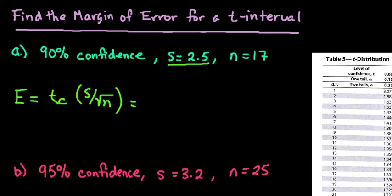Okay, so the first thing that I want to start with is finding tc. For tc, what we need to know is our degrees of freedom. And remember that our degrees of freedom are always n minus 1. So in this case, if I take 17 minus 1, my degrees of freedom would be 16.